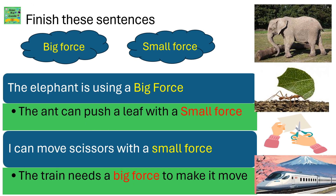Finish these sentences — big force and small force. The elephant is using a big force. The ant can push a leaf with a small force. I can move scissors with a small force. The train needs a big force to make it move.